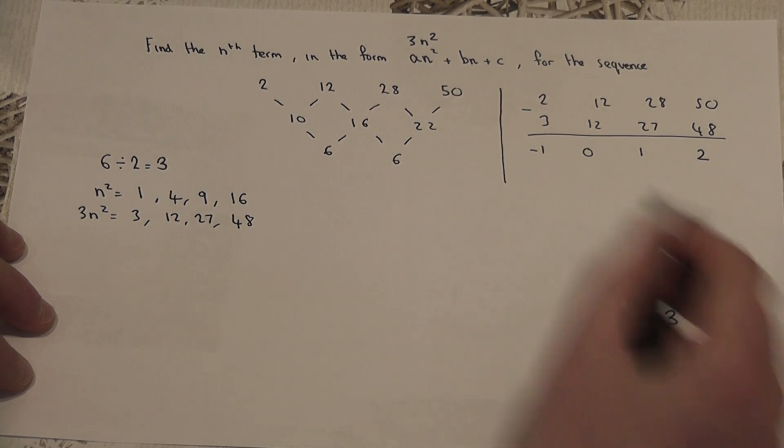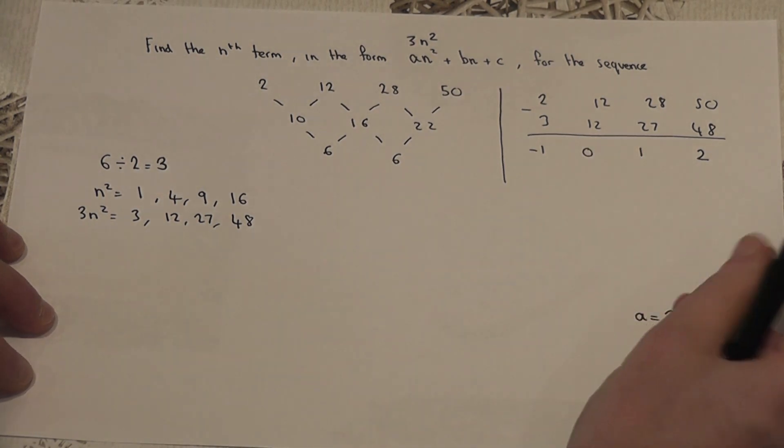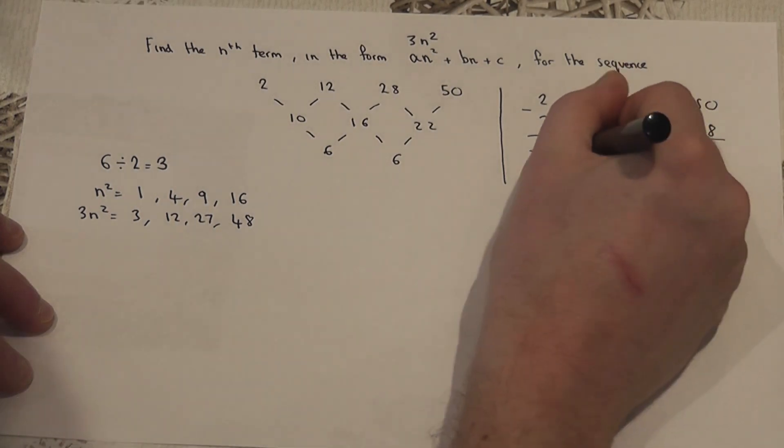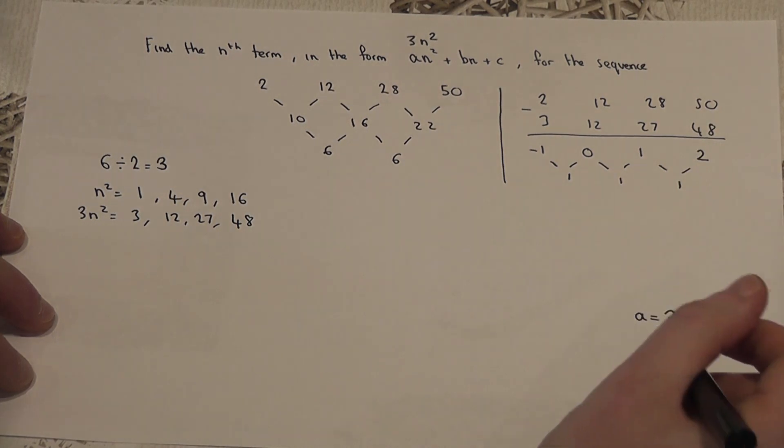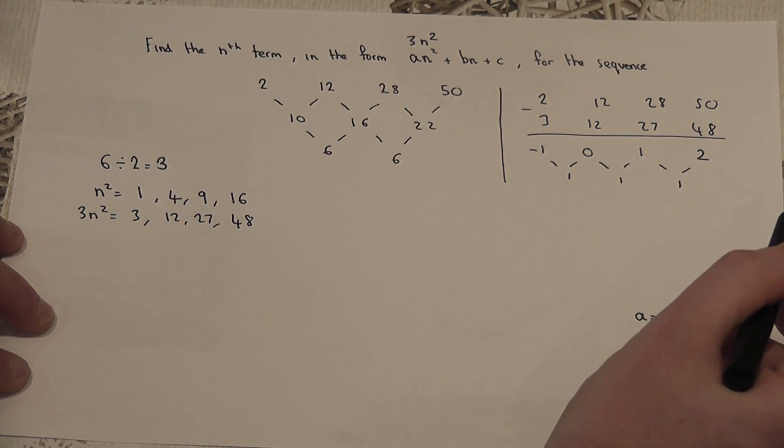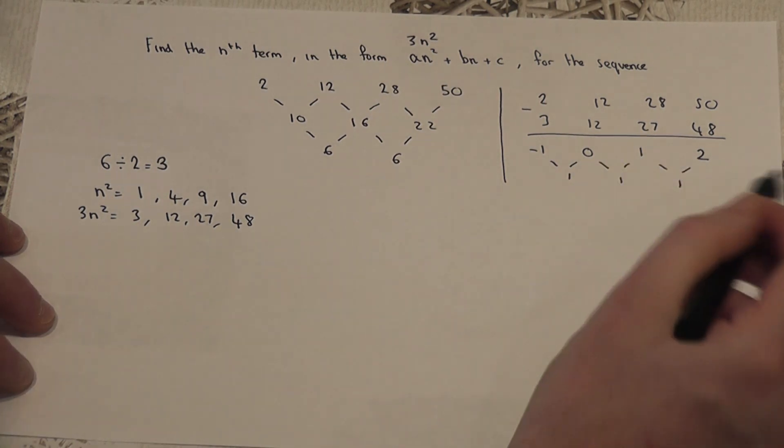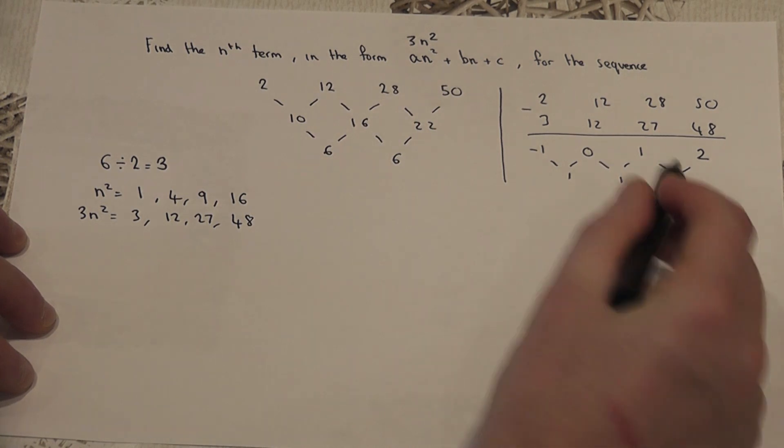So, again, a new sequence. To find the nth term, I do the first difference to begin with. So, this goes up by 1, then 1, and then 1. So, in this case, the first difference is constant. To find the nth term of a linear sequence, the first difference is just b.